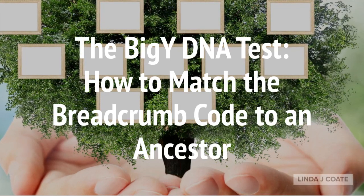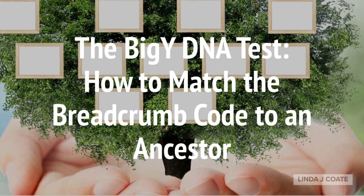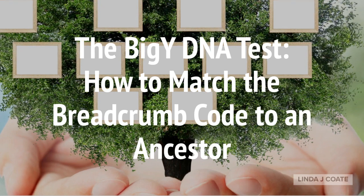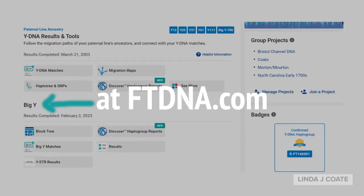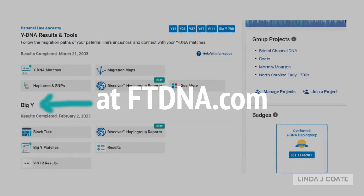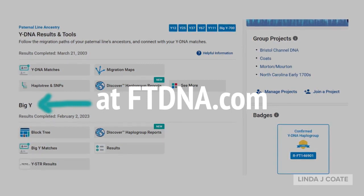The Big Y DNA test — how to match the breadcrumb code to your ancestor and how to understand the Big Y test results. The Big Y test is available at ftdna.com and is for males only, as they have the Y DNA. This test will give you evidence of your ancestry and tie you into the human tree, clear back to the beginning of time, on your father's father's father's side.